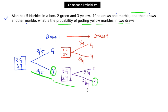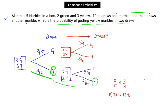To find the probability, we multiply along the desired path: 3 over 5 (probability of yellow in event one) times 2 over 4 (probability of yellow in event two given the first was yellow). That gives 3 over 10 as our desired probability.